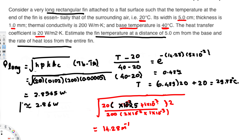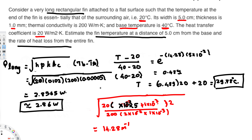So those are the two answers the question was asking for: the heat loss from the fin is 2.86 W, and the temperature at a distance of 5 cm from the base is 29.78°C. I hope this helps — thanks for watching.